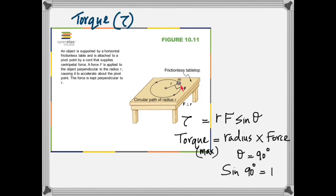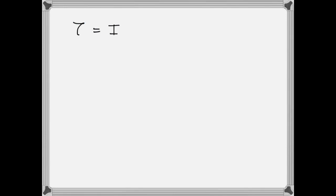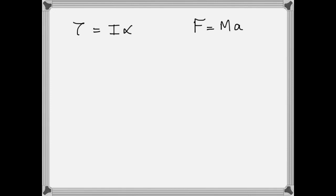Now compare two important equations. In linear motion, the net force equals mass times acceleration. The corresponding equation in rotational motion is that the net torque equals I times alpha. Here, I is called rotational inertia, also called moment of inertia. It takes the place of mass in linear motion. So wherever mass appears in linear motion, we have rotational inertia in rotational motion.